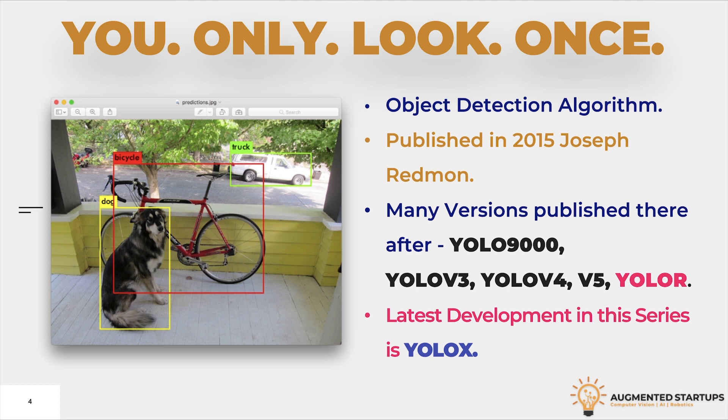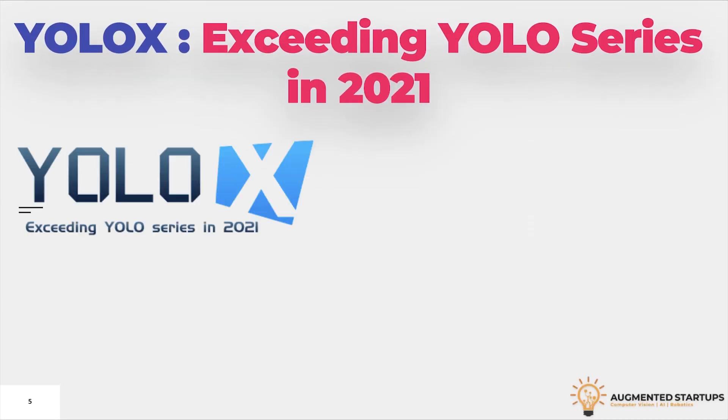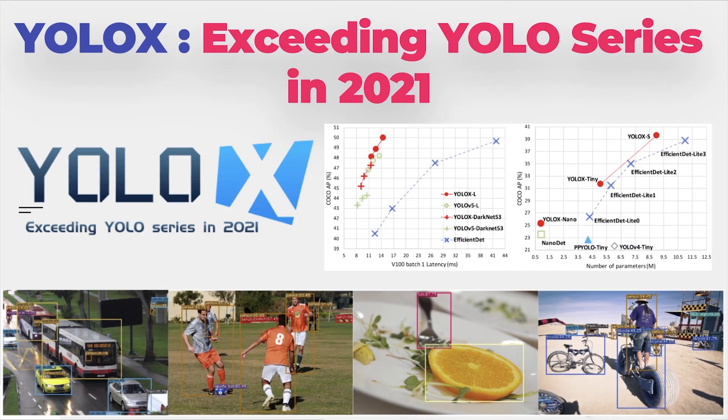Since then, there has been a series of developments in YOLO detectors like YOLO 9000, YOLO V3, V4, V5, YOLO R and the most recent one is YOLO X that we will get to know about in this video.